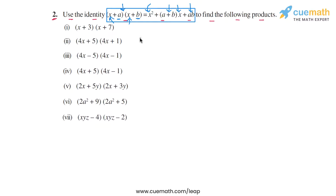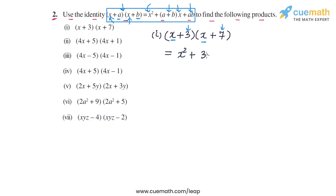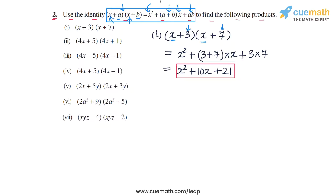Let's apply this identity to each of the seven parts. In part one, we have (x+3)(x+7). The common term is x, and the non-common terms are 3 and 7. We take the square of the common part: x². Then we add the non-common parts — 3 plus 7 — and multiply with x, giving 10x. The third term is 3×7 = 21. So the product is x² + 10x + 21.